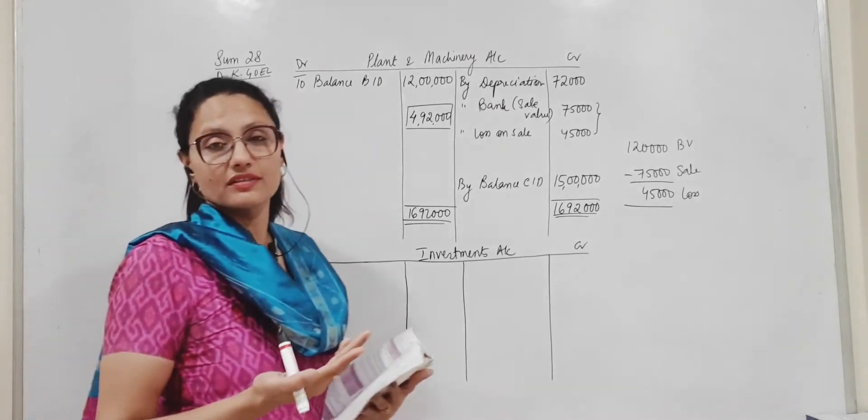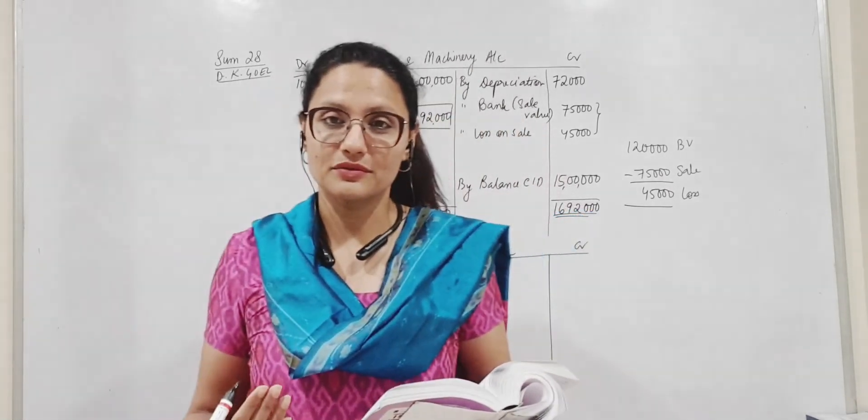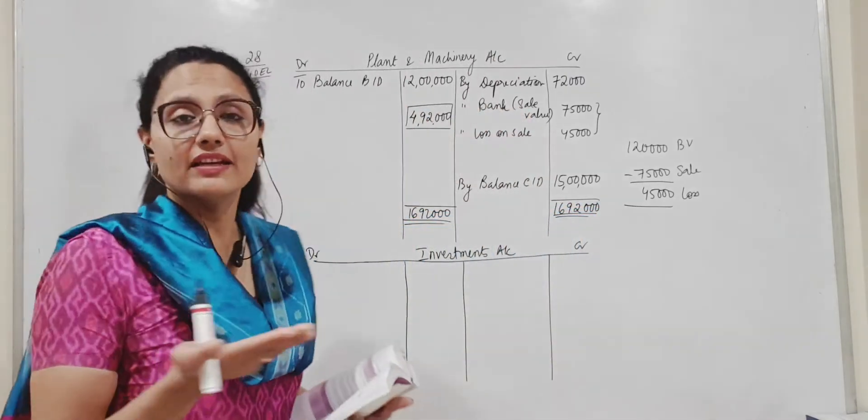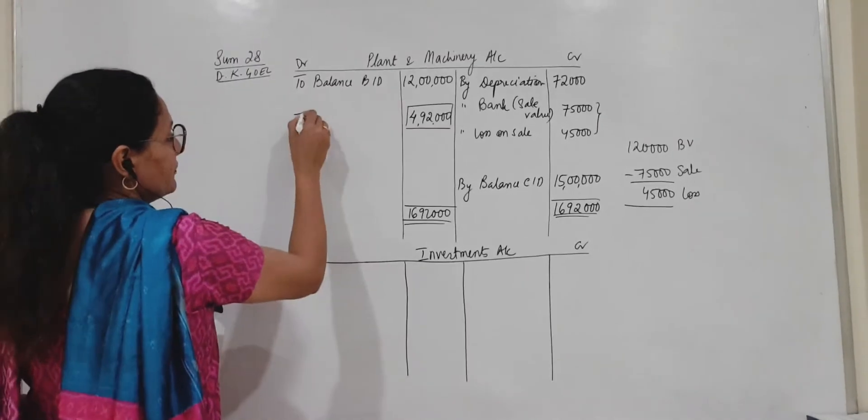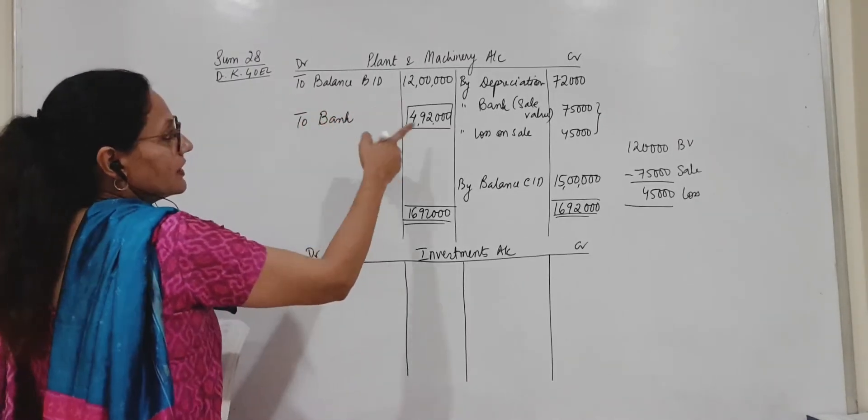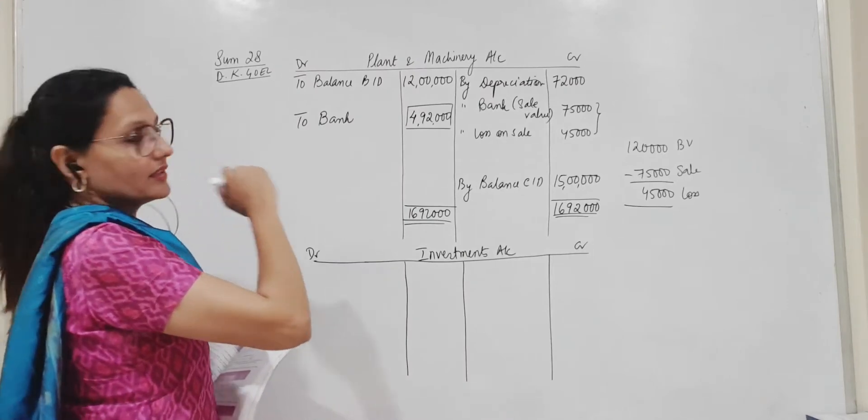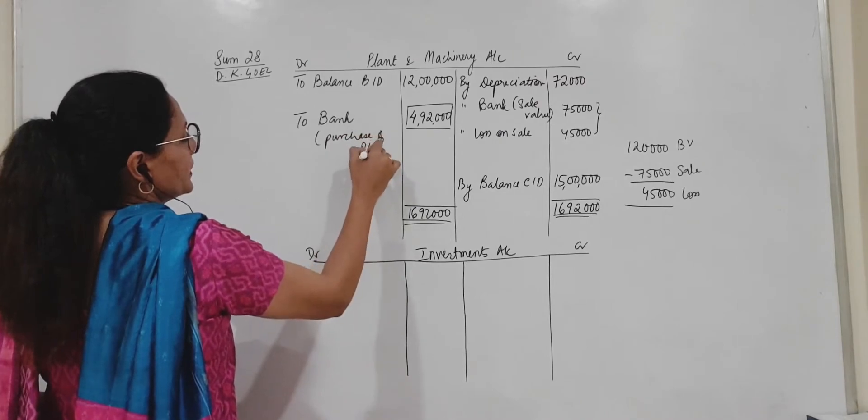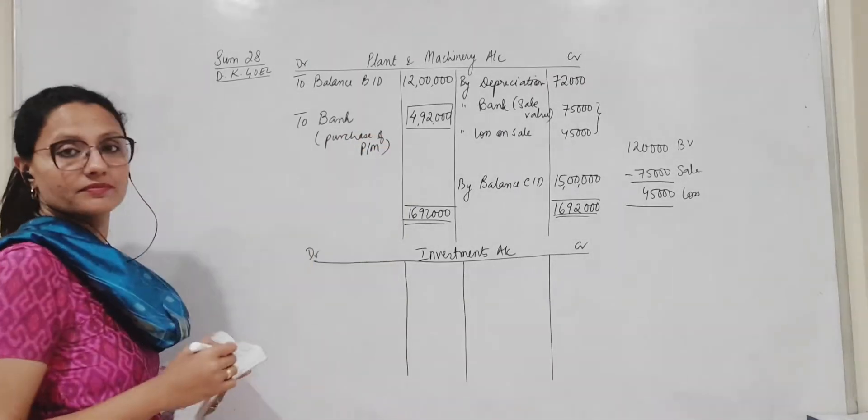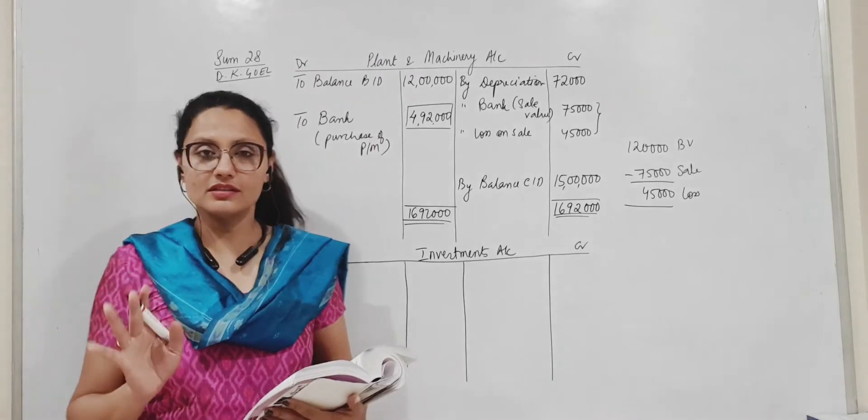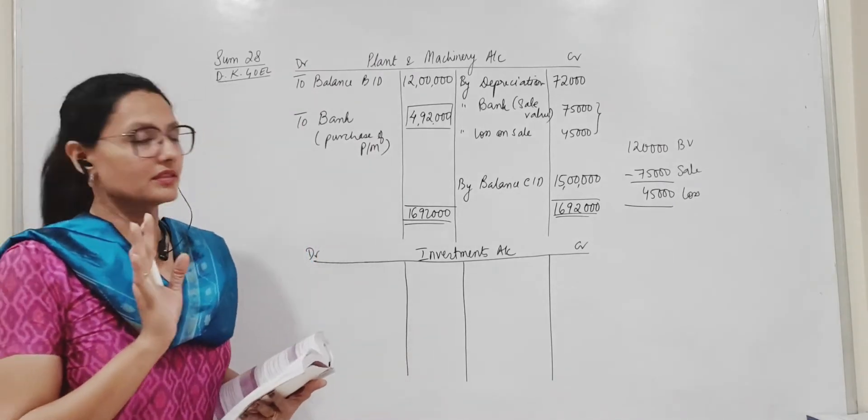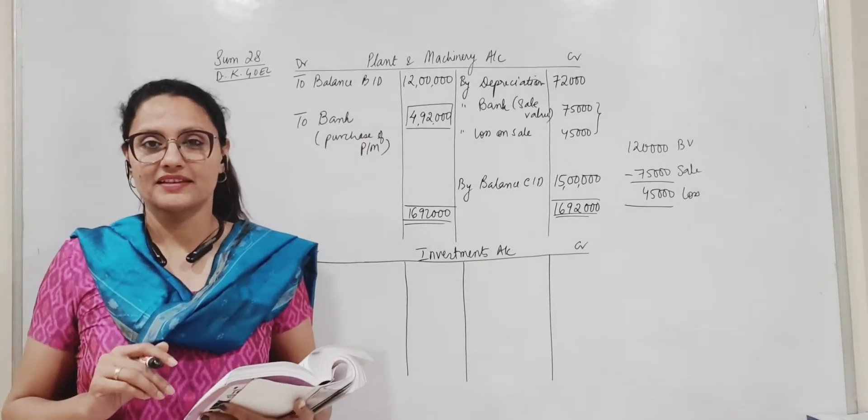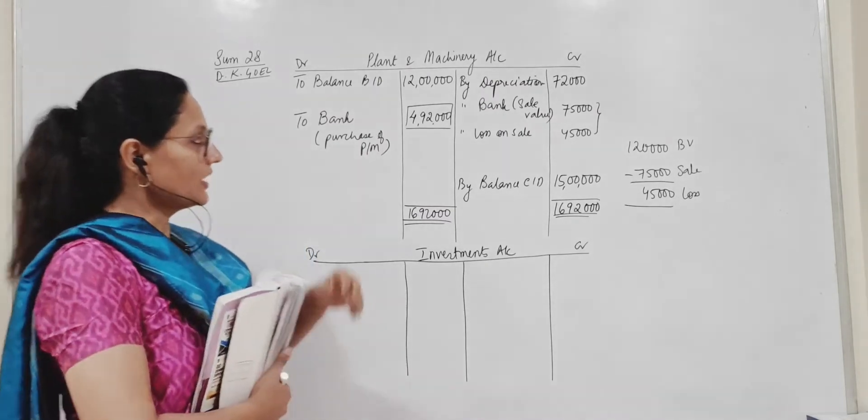Now I would have definitely have a balance of 4 lakh 92,000 here if I have to have this total on the debit side also. This is the missing figure because 16 lakh 92,000 minus 12 lakhs is 4 lakh 92,000. That is falling short on the debit side. So what is this for? When do we debit an asset account? When we purchase, isn't it? Then definitely it means that this is the value of machinery purchased during the year. This is for purchase of plant and machinery. This is the balancing figure. So I have got this. My objective is done. I have closed the account and this is your working related to the asset.